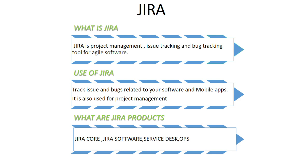So basically, Jira is a project management, issue tracking, and bug tracking tool for agile software. The main use of Jira is to track the issues and bugs related to your software or mobile app.